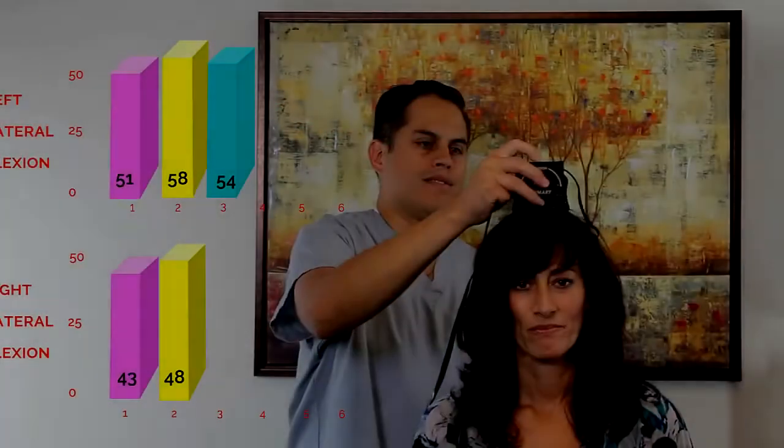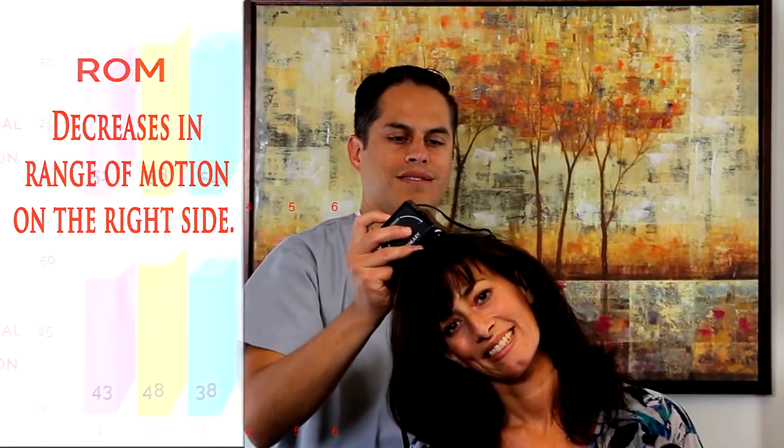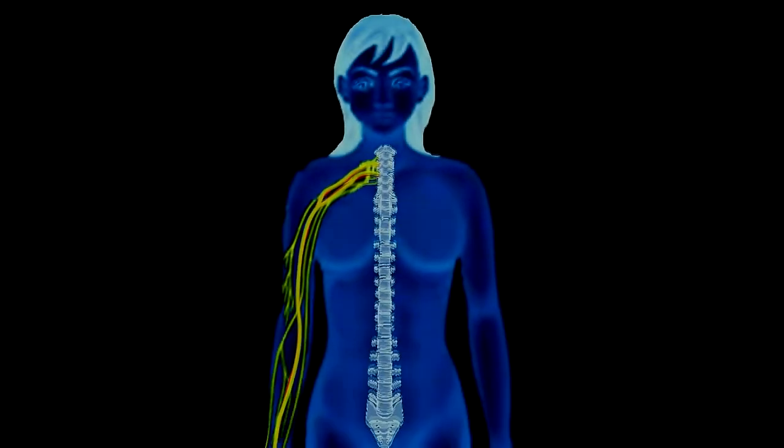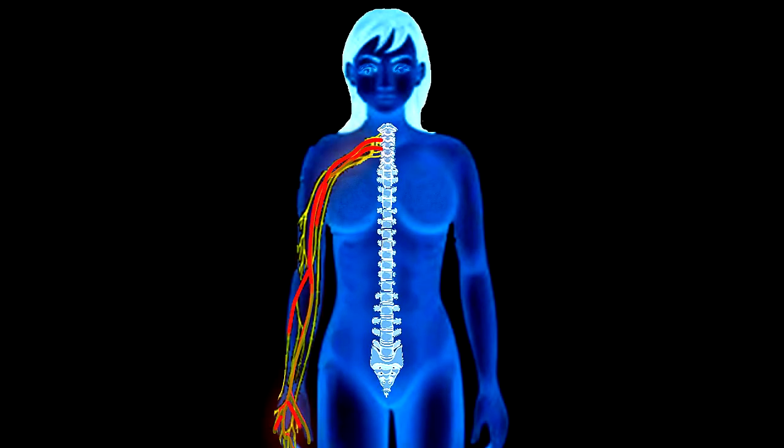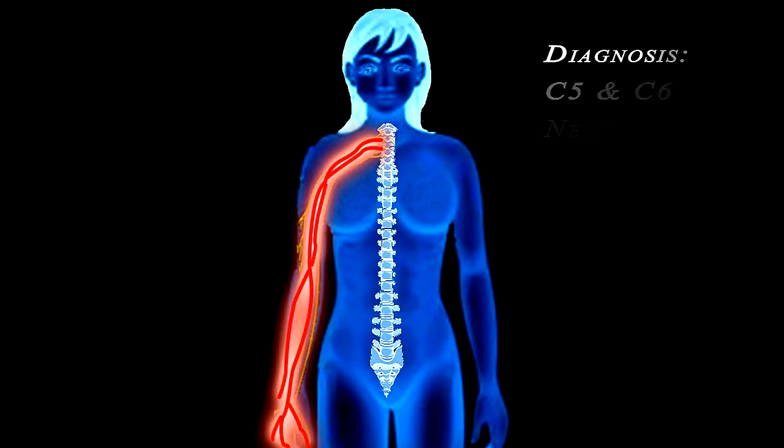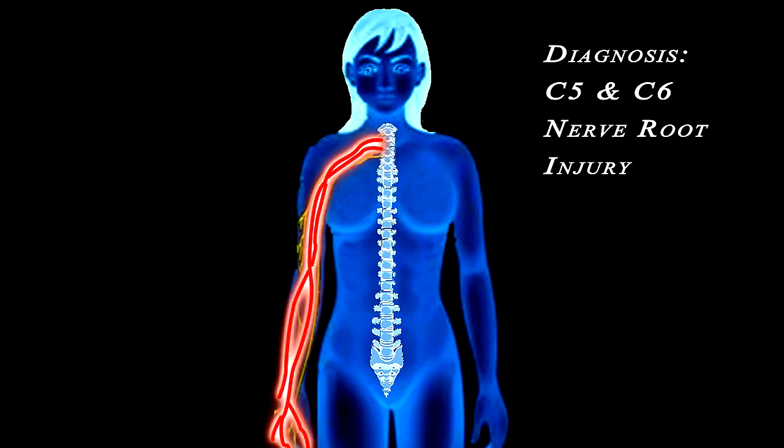The decreases in range of motion reflect difficulties in motion specifically on the right side. Looking at the common thread through all this information, it appears that Emma is suffering with a right side C5 and C6 nerve root injury affecting the musculocutaneous and median nerves.